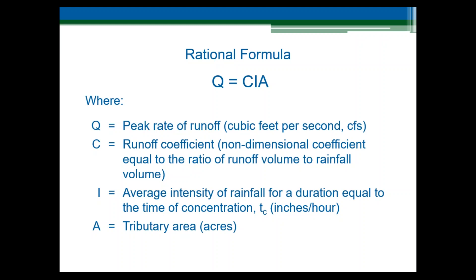Q is the peak flow rate that we are seeking to calculate, and it has units of cubic feet per second. C is the runoff coefficient — runoff coefficients vary with the size of the event and the infiltration characteristics of the soils on site. I is the average rainfall intensity for a specified return period — two-year in our case — that has a duration equal to the time of concentration. In order to determine the intensity, you first have to calculate the time of concentration. A is the area draining to the swale, expressed in acres.